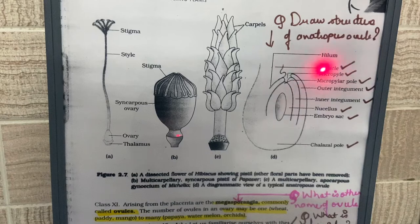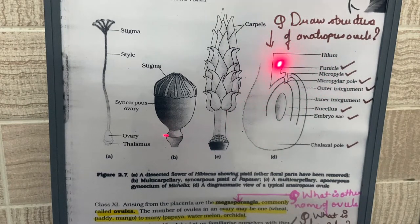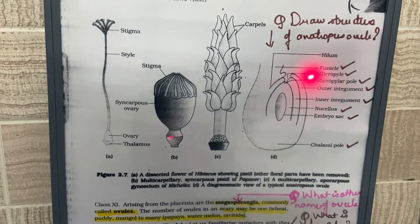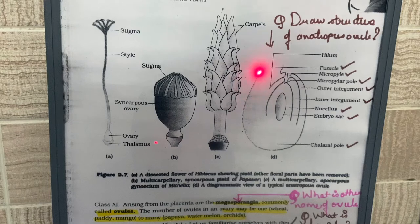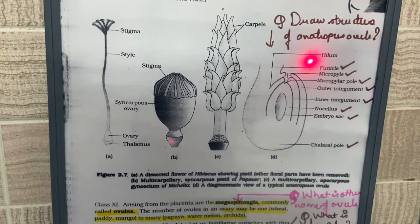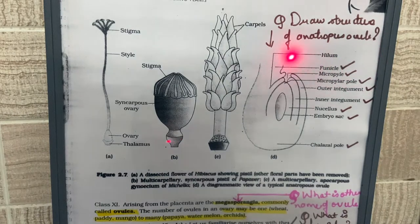The first part of the anatropous ovule is the funicle. The funicle is the stalk of the ovule that connects the ovule with the placenta. The ovule is connected with the ovary with the help of the placenta, and the funicle serves as this connecting stalk.